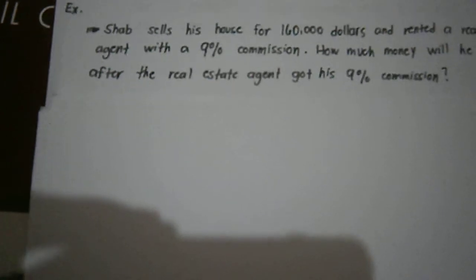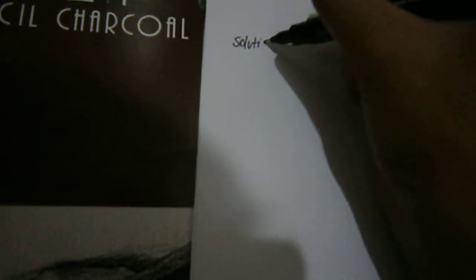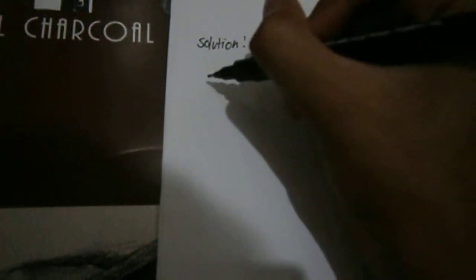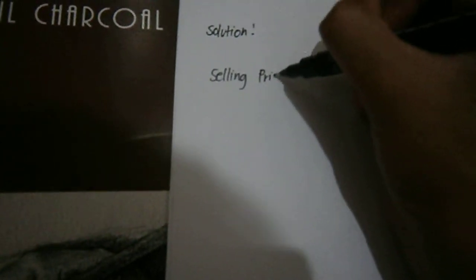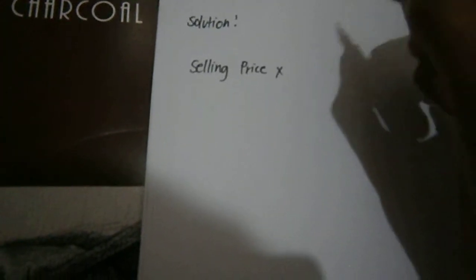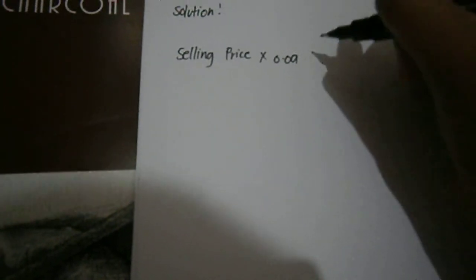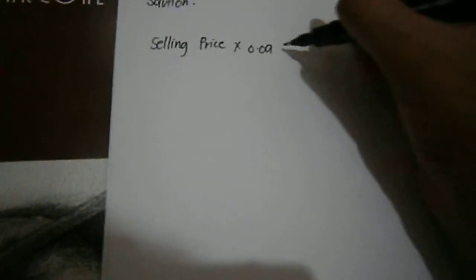So, the given values are $160,000 and the 9% commission of the agent. The solution: selling price times 0.09 equals commission.